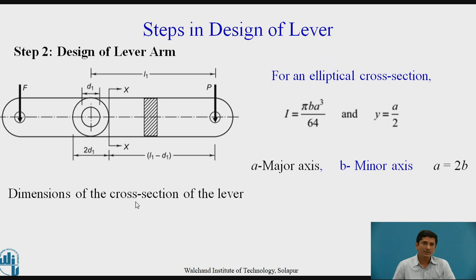The dimension of the lever cross section can be obtained by the equation σB equals MBY by I. This is nothing but bending stress equals M by Z where Z is the section modulus. We need to take great care while selecting the cross section of a lever.